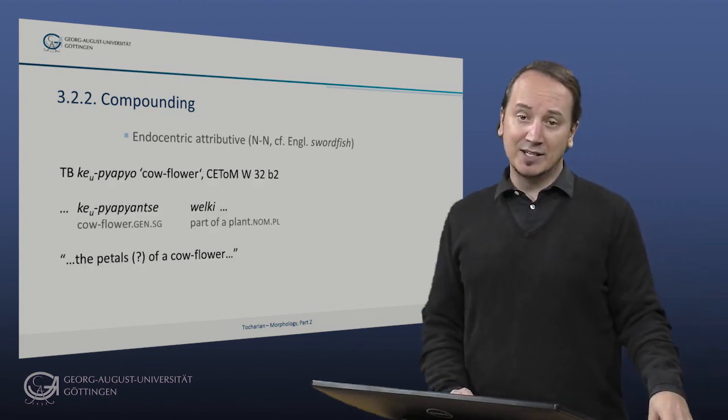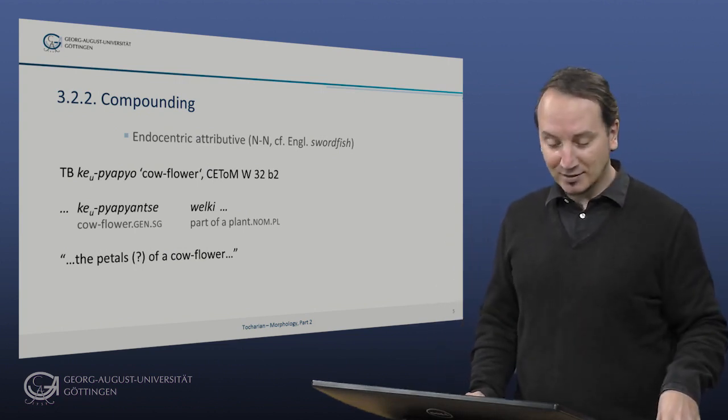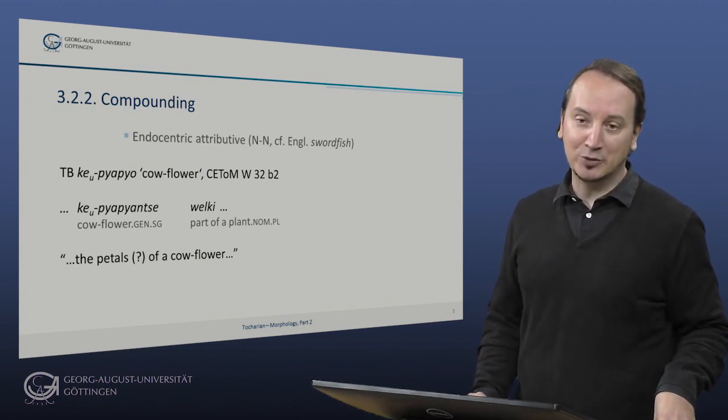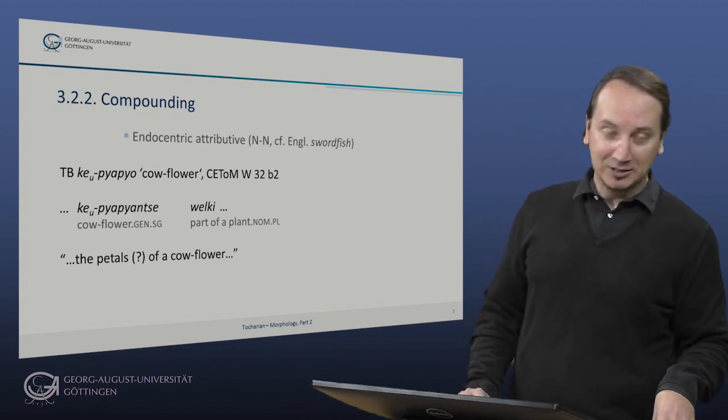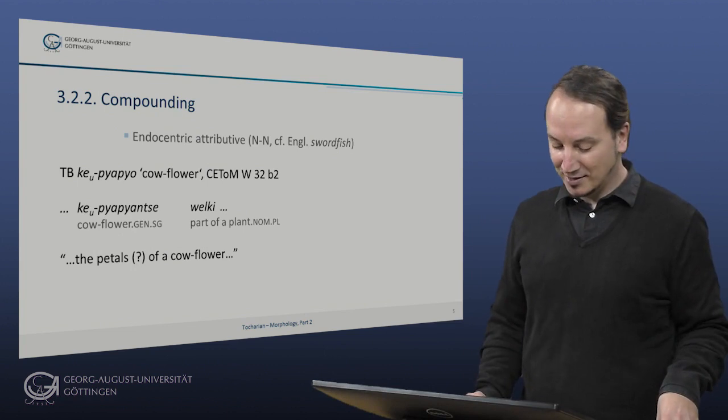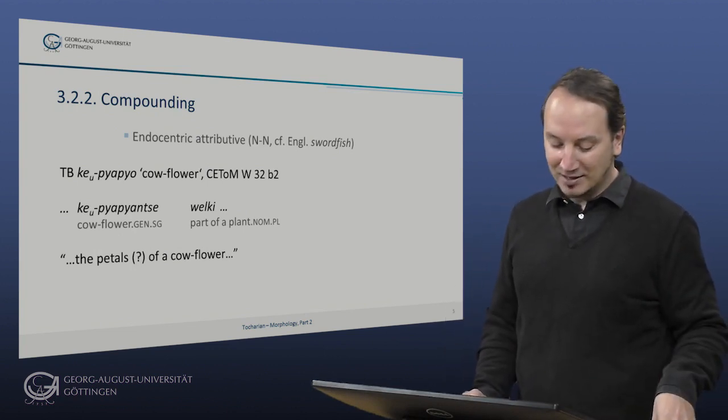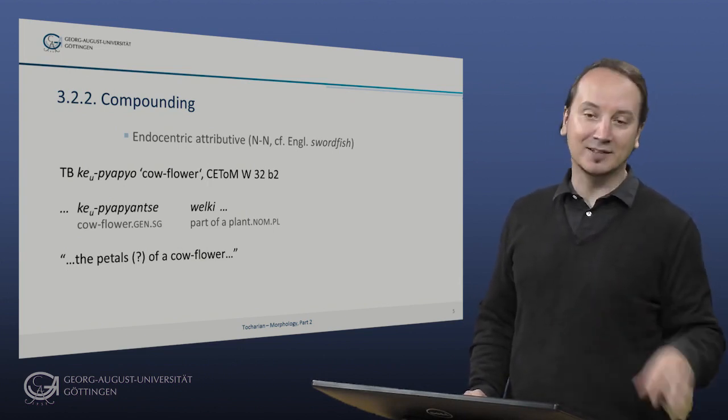Our example is taken from a very fragmentary medical text, for which we have plenty in Tocharian. And it is Keo piapio. Piapio is flower and Keo is cow, so a cow flower. And we have Keo piapianze velki. And velki is some kind of part of a plant and it very likely means the petals of a cow flower.